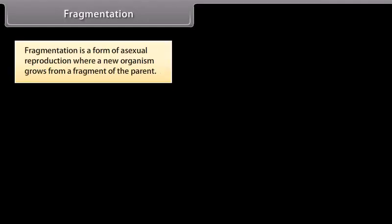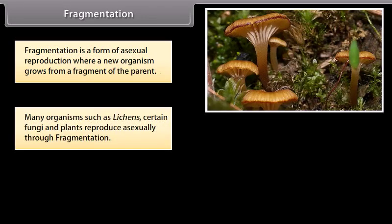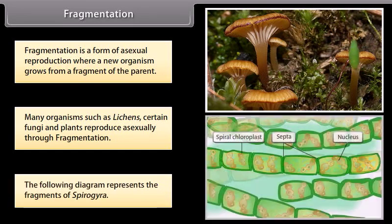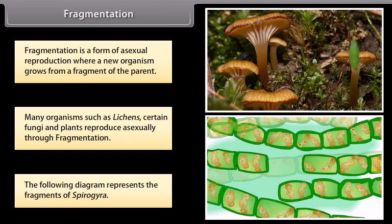Fragmentation is a form of asexual reproduction where a new organism grows from a fragment of the parent. Many organisms such as lichens, certain fungi, and plants reproduce asexually through fragmentation. The following diagram represents the fragments of Spirogyra.